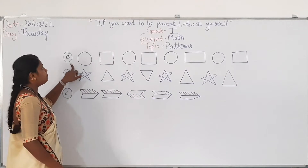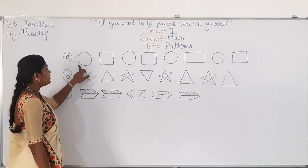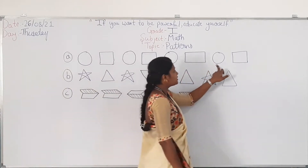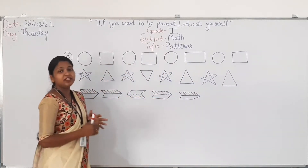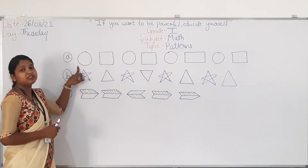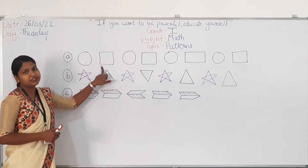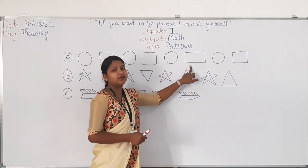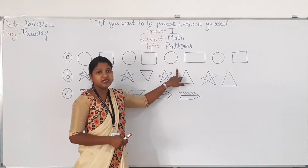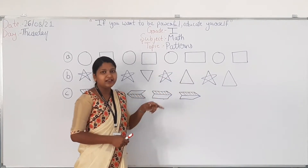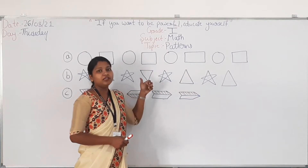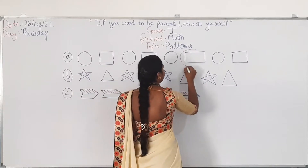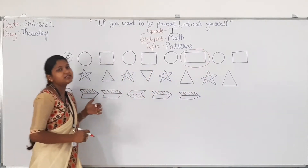See the first figure. In this pattern, the shapes are: circle, square, circle, square, circle, rectangle, circle, square. Can you tell me the basic shape? The basic shape is circle and square. After circle, the basic shape should be square — so this rectangle is the odd one out. You have to circle the rectangle because it doesn't belong to this pattern.